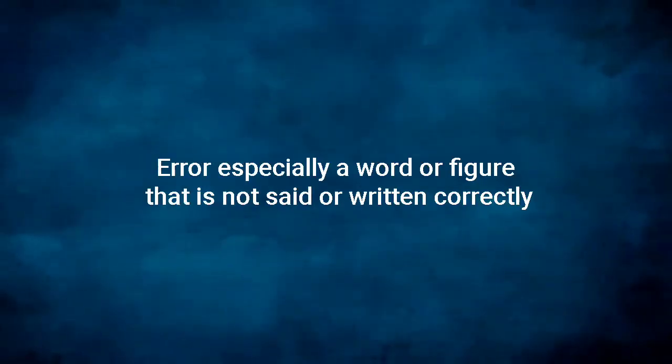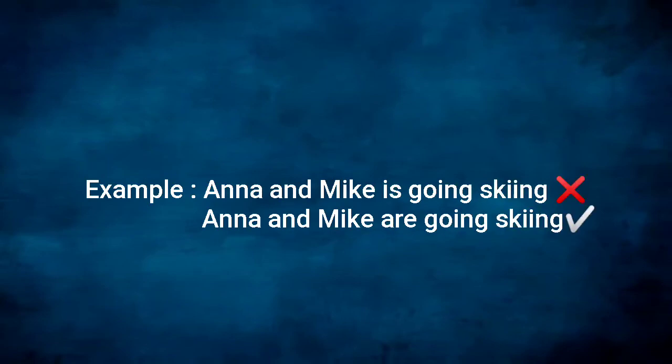Error — what is error? Error is especially a word or figure that is not said or written correctly. The example of error is: 'Anna and Mike is going skiing.' Anna and Mike are plural, and 'is' is singular. So the sentence should read: 'Anna and Mike are going skiing.'